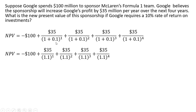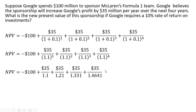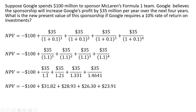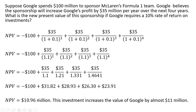So 1 plus 0.1 — we'll simplify the denominators here a little bit, and then simplify them a little bit more. 1.1 squared is 1.21; 1.1 raised to the third power is 1.331, and so on. Now doing a little division: 35 divided by 1.1 is 31.82, and so on. And we have a net present value that is positive, of almost $11 million.